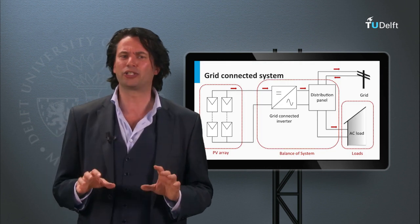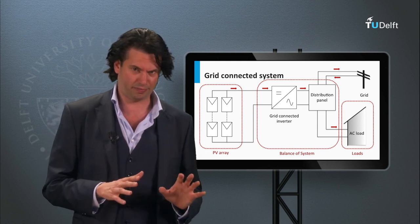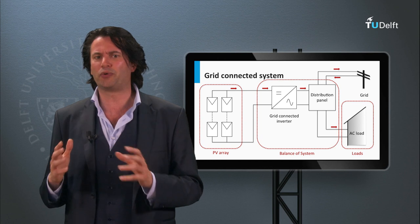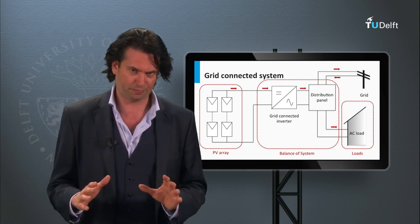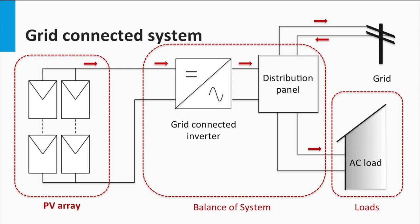As the name suggests, the grid-connected PV system is connected to the electric grid. There is a continuous exchange of power with the electric grid via the distribution panel. The grid-connected PV system has these important components. The PV array is an interconnection of modules that supplies the required photo-generated power to the system. Power rating of the array is determined based on the system design.